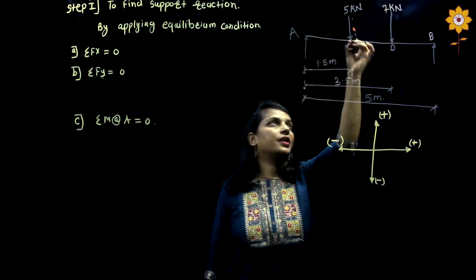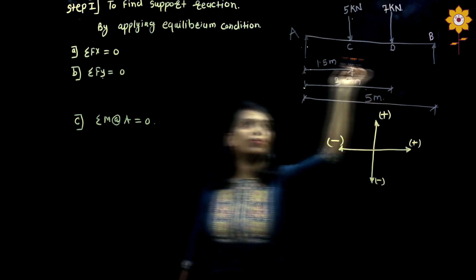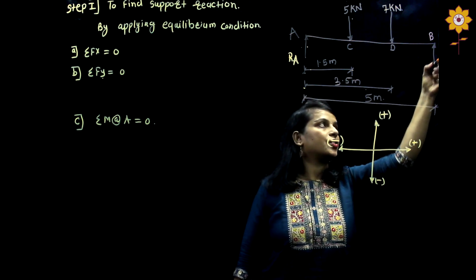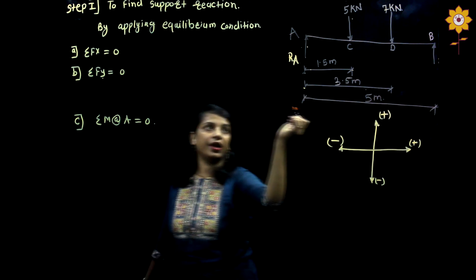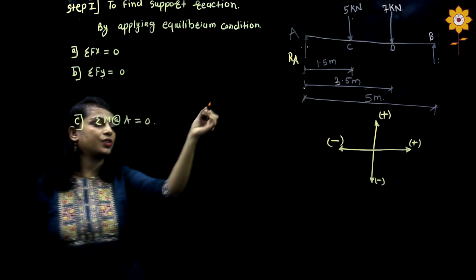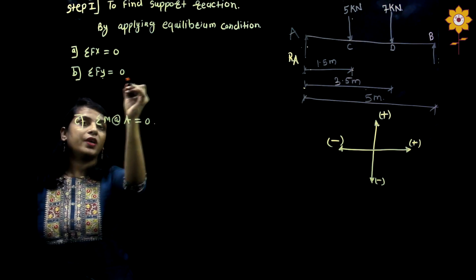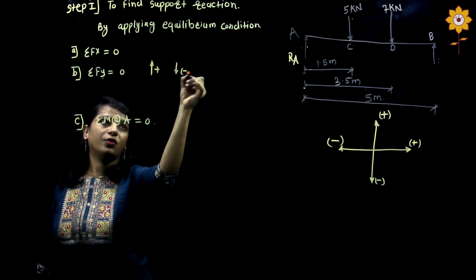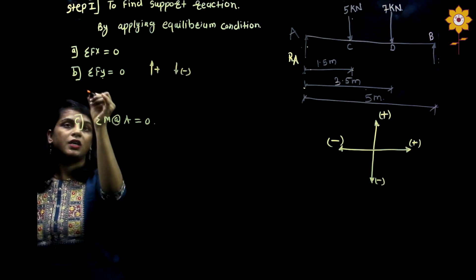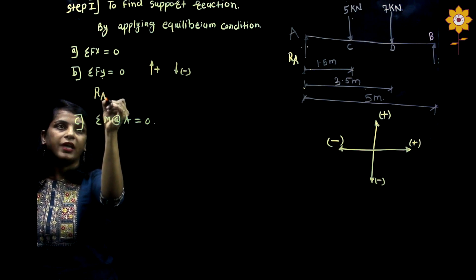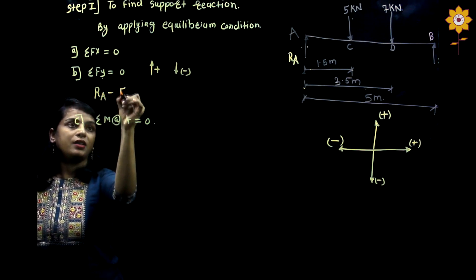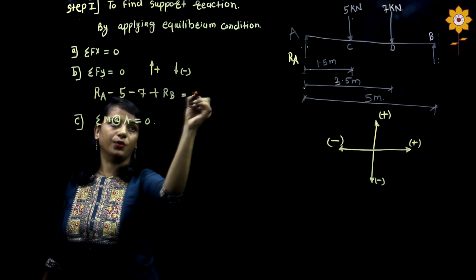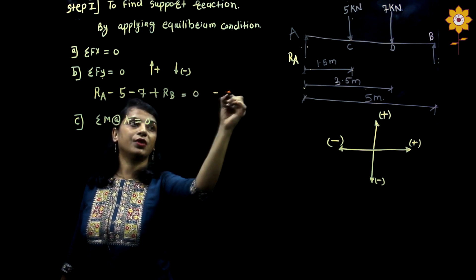You can see there are 4 forces in the diagram. RA is the reaction at support A and RB is the reaction at support B. So we have to find RA and RB. Applying summation Fy = 0, with upward forces positive and downward forces negative: RA minus 5 minus 7 plus RB = 0. This is equation number 1.